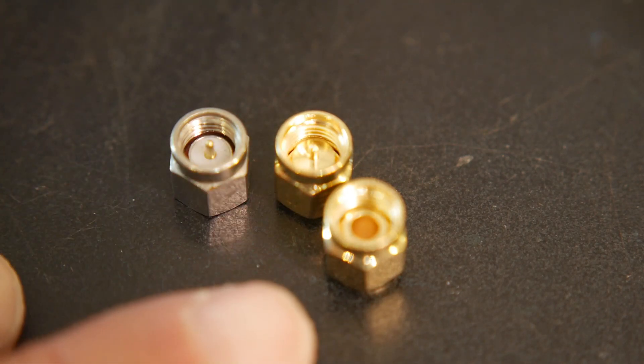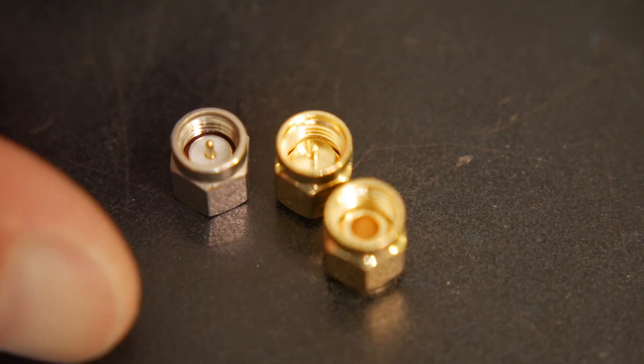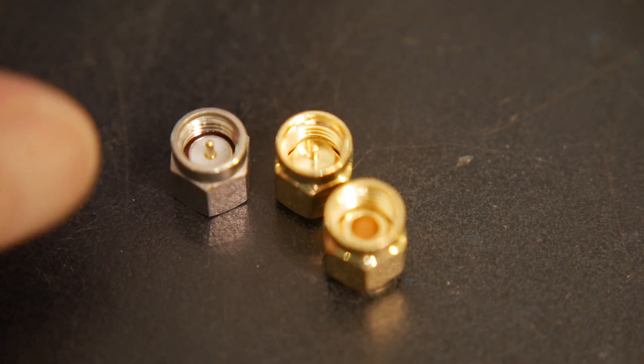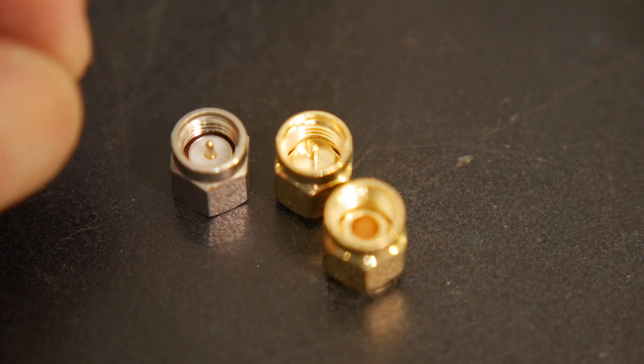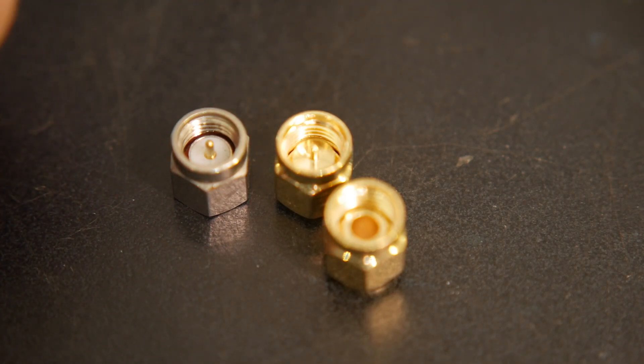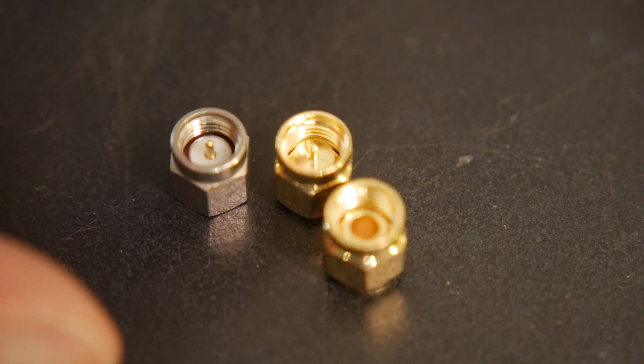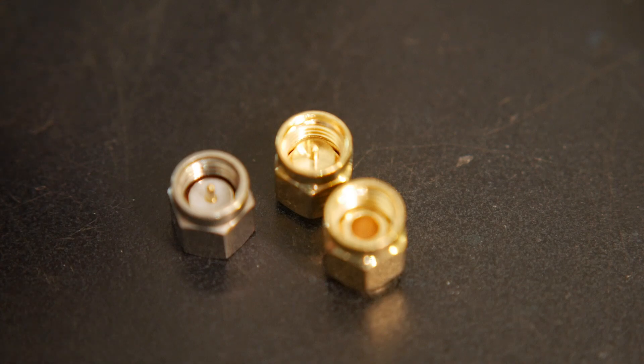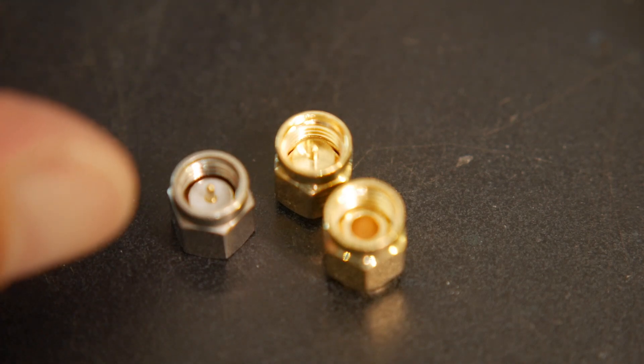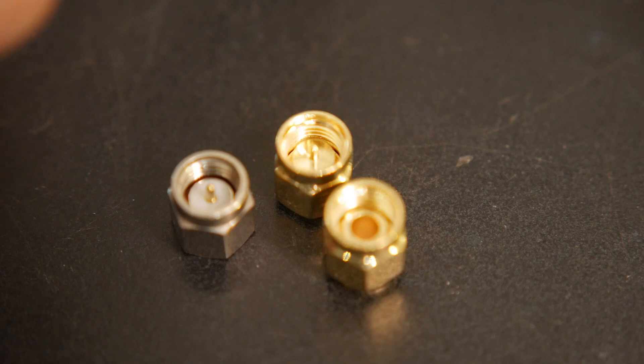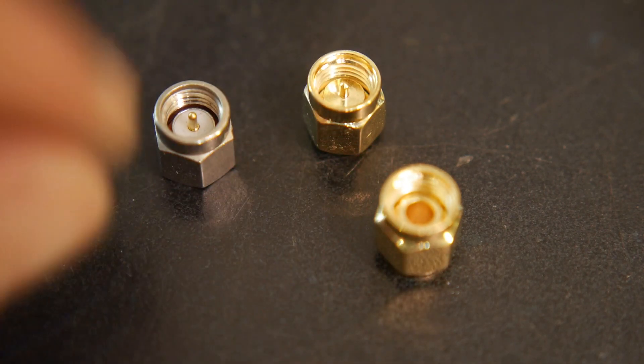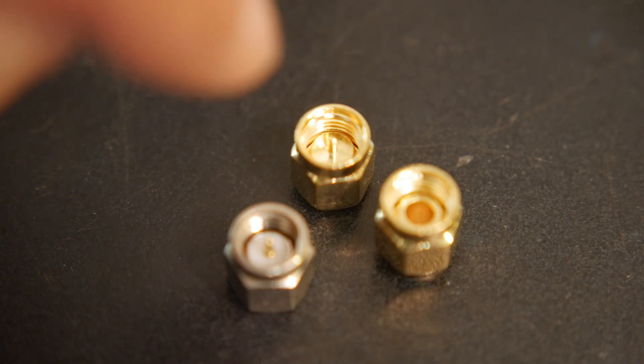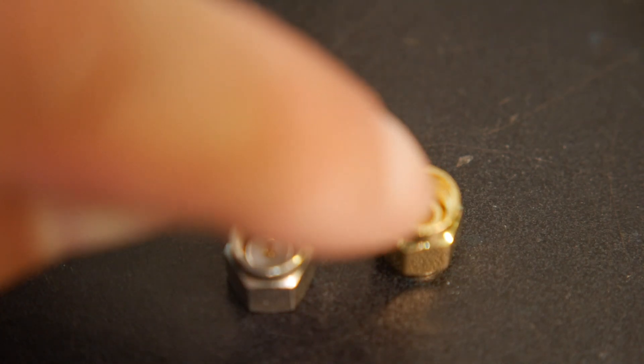Your information in a vector network analyzer all comes down to phase information. And so the phase is going to be a function of the distance between the connector on the VNA and the inside of the connector on your cal standard.